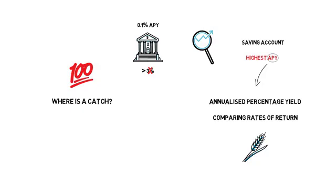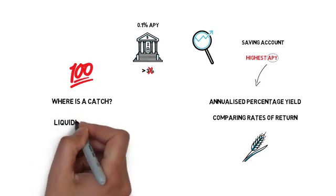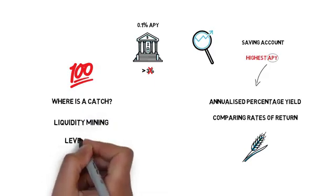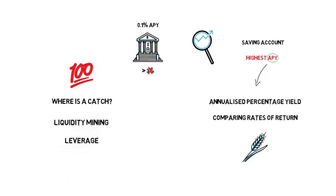So how is that possible, and where is the catch? There are three main elements that make such returns possible: liquidity mining, leverage, and risk.